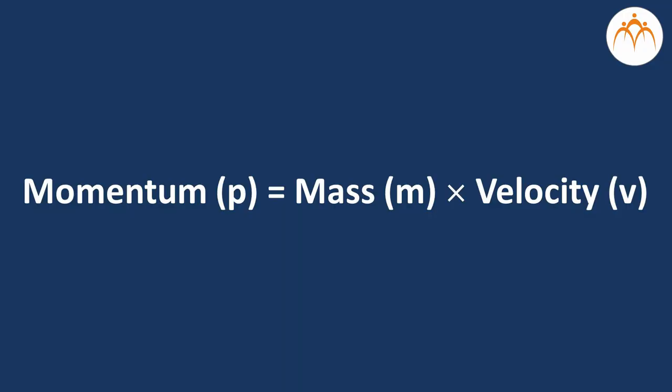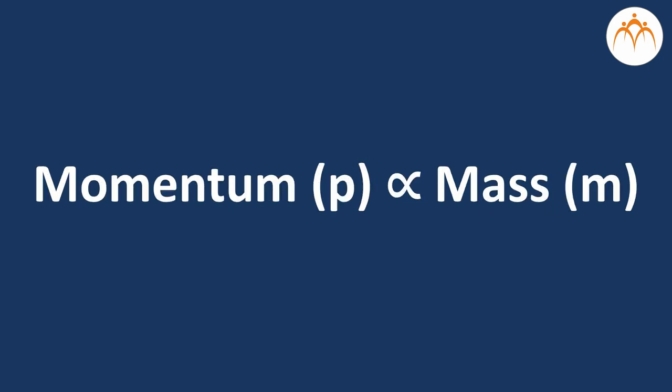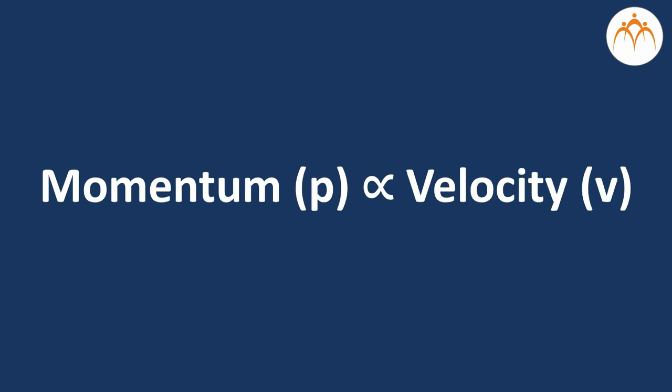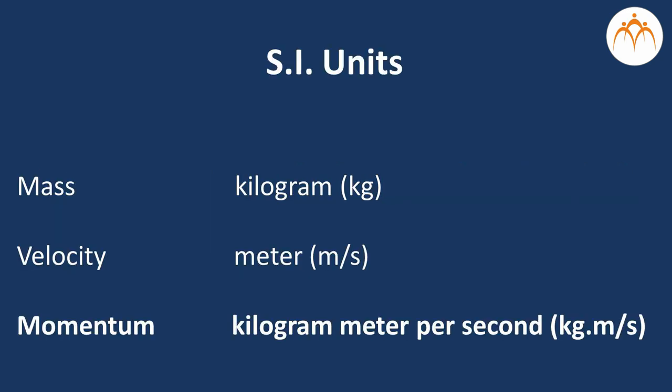Momentum is equal to mass times velocity. In physics, the symbol for the quantity momentum is lowercase p. p is equal to m multiplied by v where m is the mass and v is the velocity. The equation illustrates that momentum is directly proportional to an object's mass and directly proportional to the object's velocity. The units for momentum would be mass units times velocity units. The standard metric unit of momentum is kilogram meter per second.